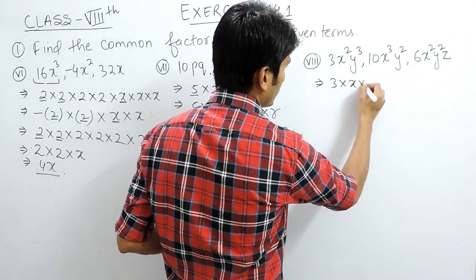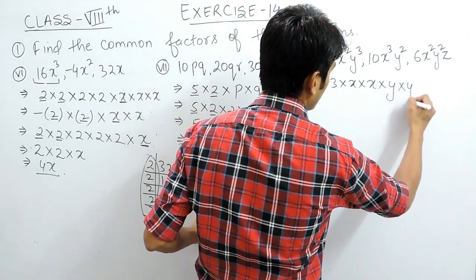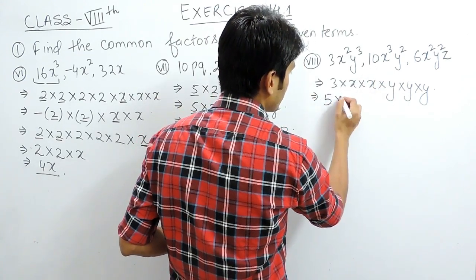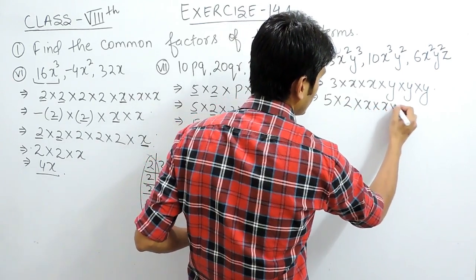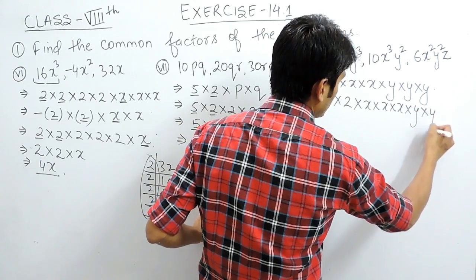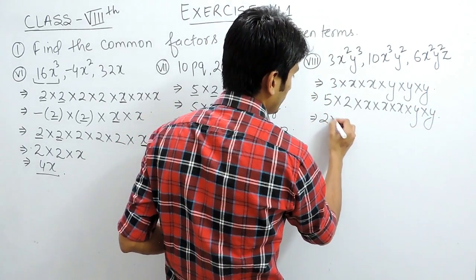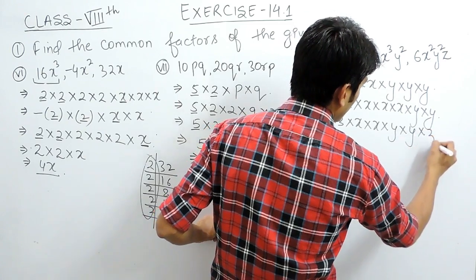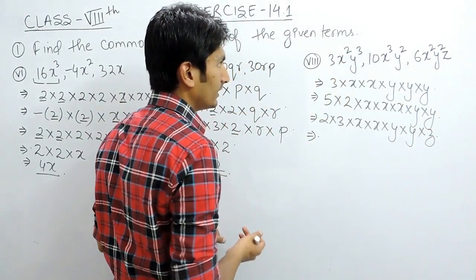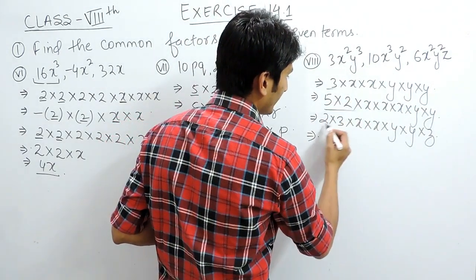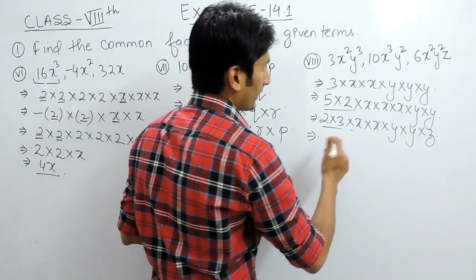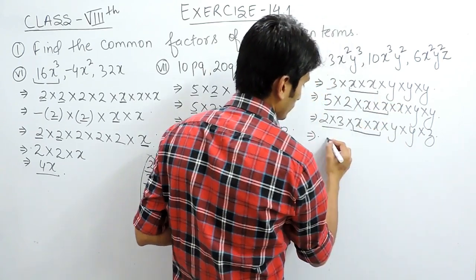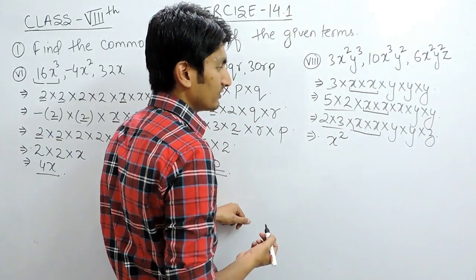Now for the third part: 3x²y⁴ can be written as 3 × x × x × y × y × y × y. The second term, 10x³y², can be written as 5 × 2 × x × x × x × y × y. The third term, 6xy³z, can be written as 2 × 3 × x × y × y × y × z. There is no numerical common factor, but there are common variables. There are two x's in each term, so x × x = x².